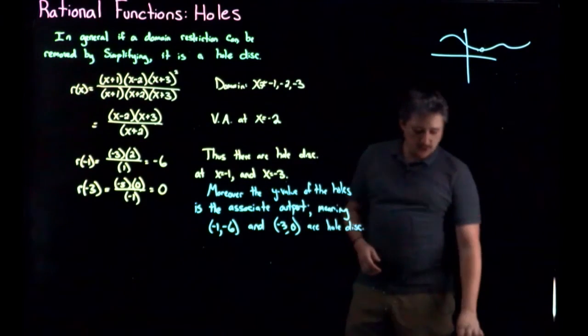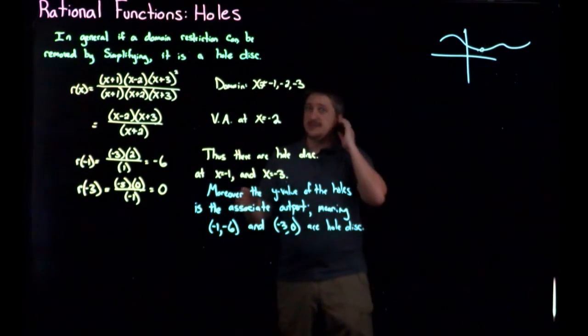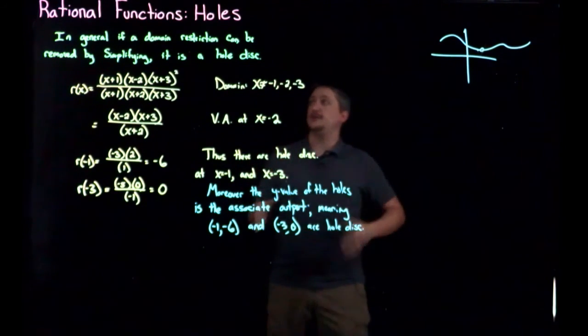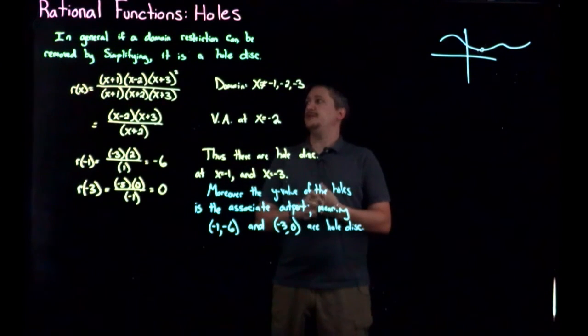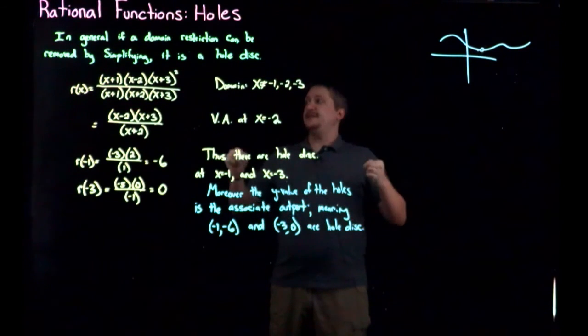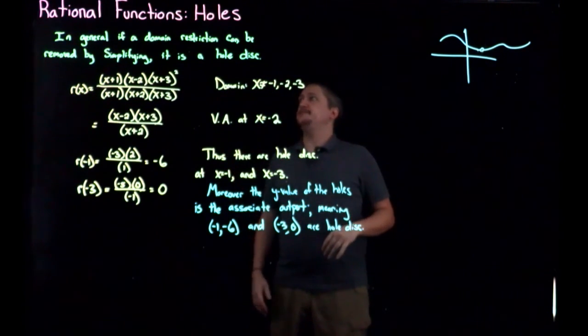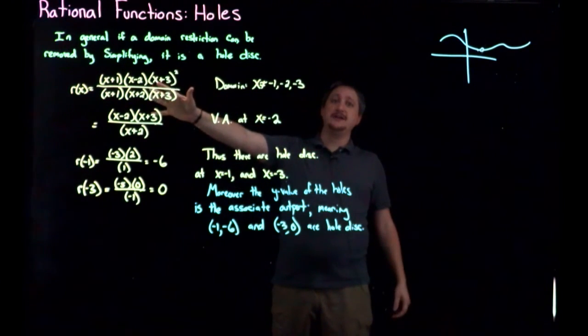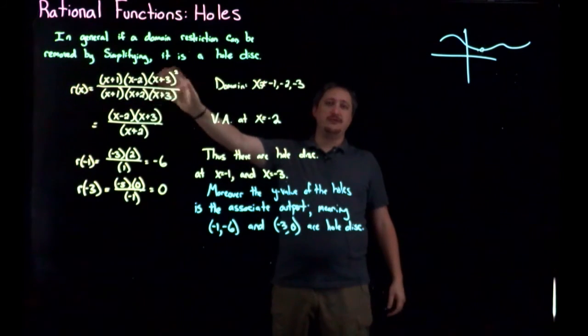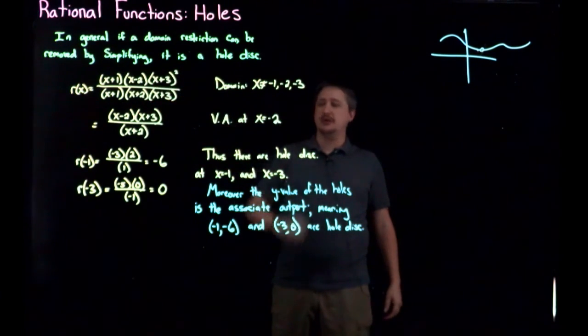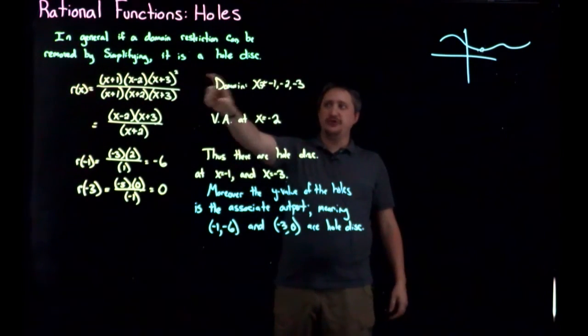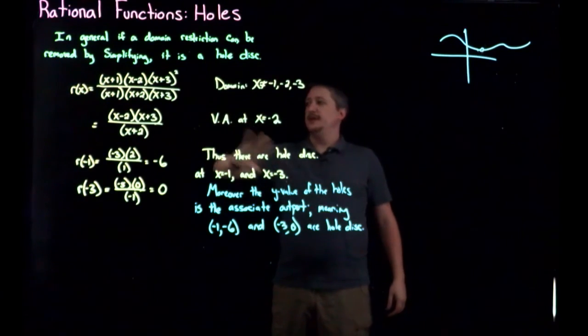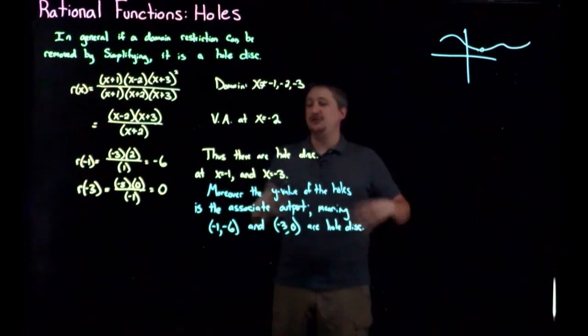So finding hole discontinuities, it's the same process as the vertical discontinuity, right, the vertical asymptote discontinuities or the infinite discontinuities depending on which one you like to say, where essentially you start out by finding the domain restrictions, which usually involves factoring so you can find when the bottom is zero,